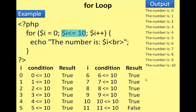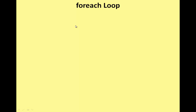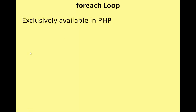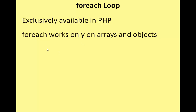11 is not less than 10 — the for loop condition becomes false and the loop ends. The output is displayed in the browser showing numbers 1 through 10.